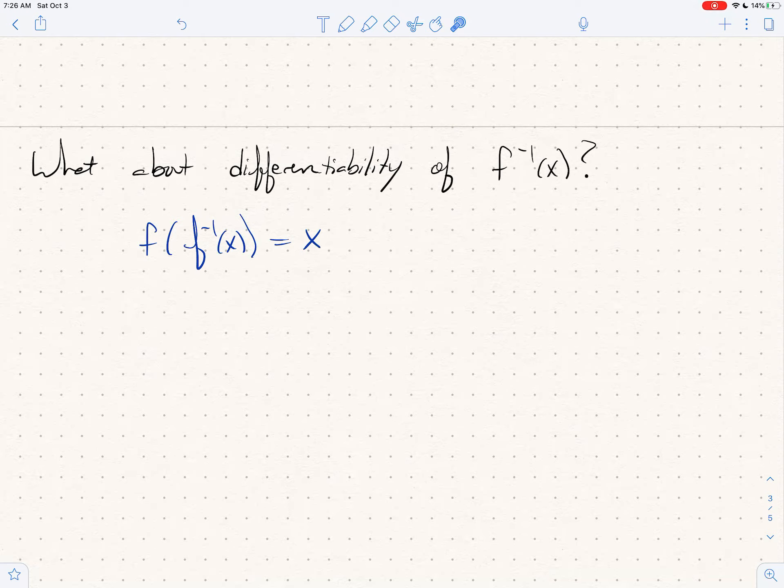So think with me. Let's think carefully through the chain rule. The chain rule says if you want to take a derivative of a composition, it's the derivative of the outside, plug in the inside, times the derivative of the inside.